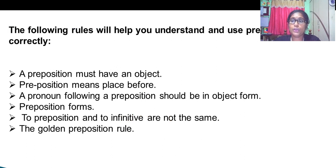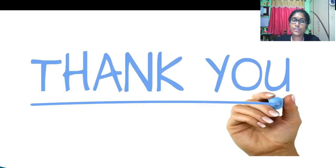There are certain rules to follow. It will help us to understand these prepositions correctly. Firstly, a preposition must have an object. Pre-preposition means place before. A pronoun following a preposition should be in object form. Also, preposition and to infinitive should not be the same. These are the golden preposition rules.